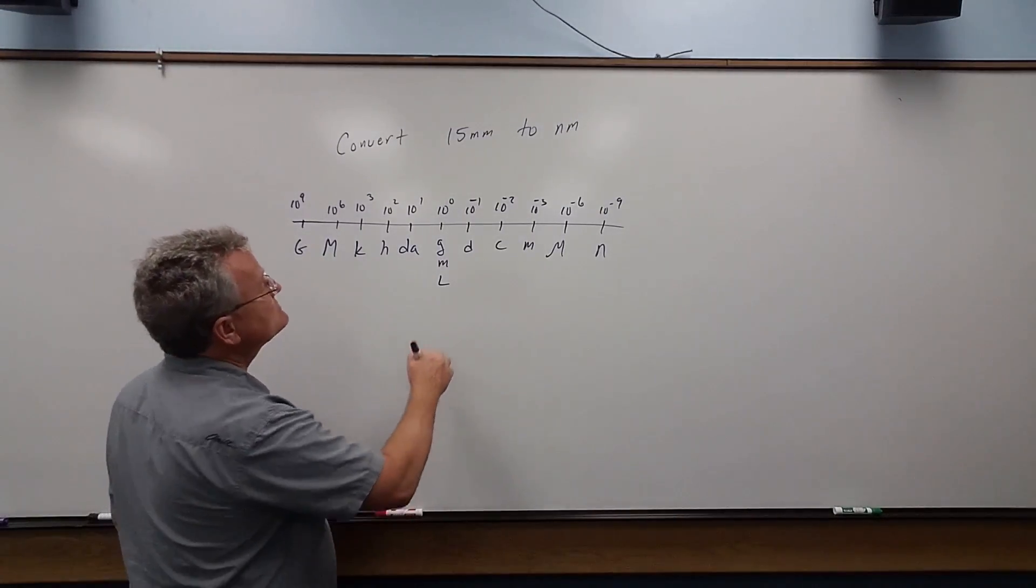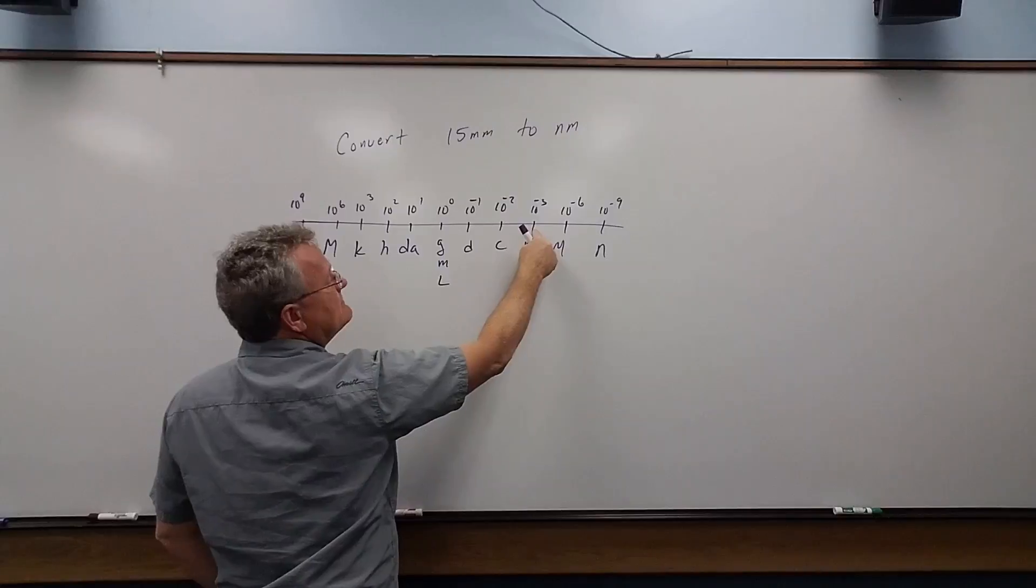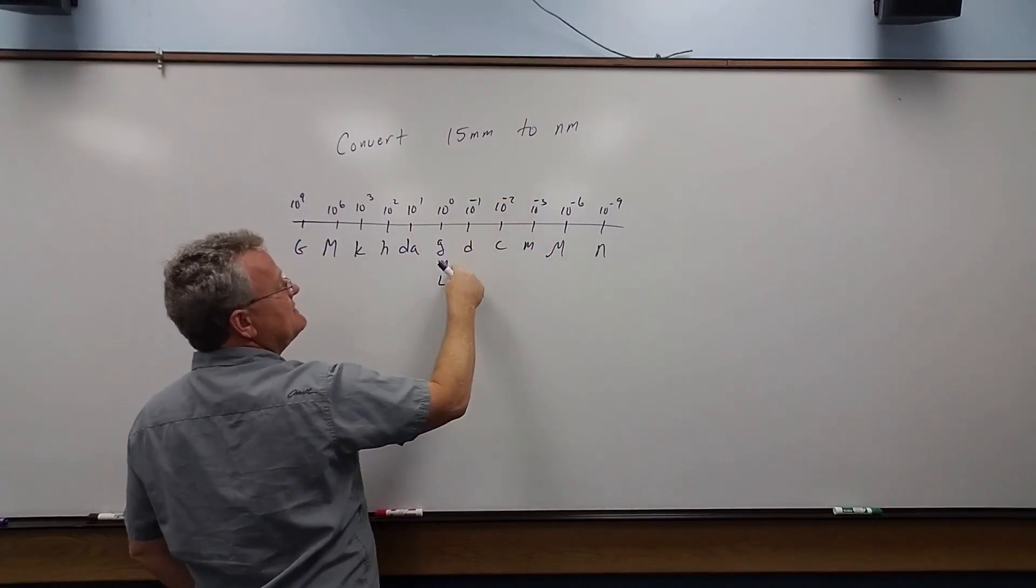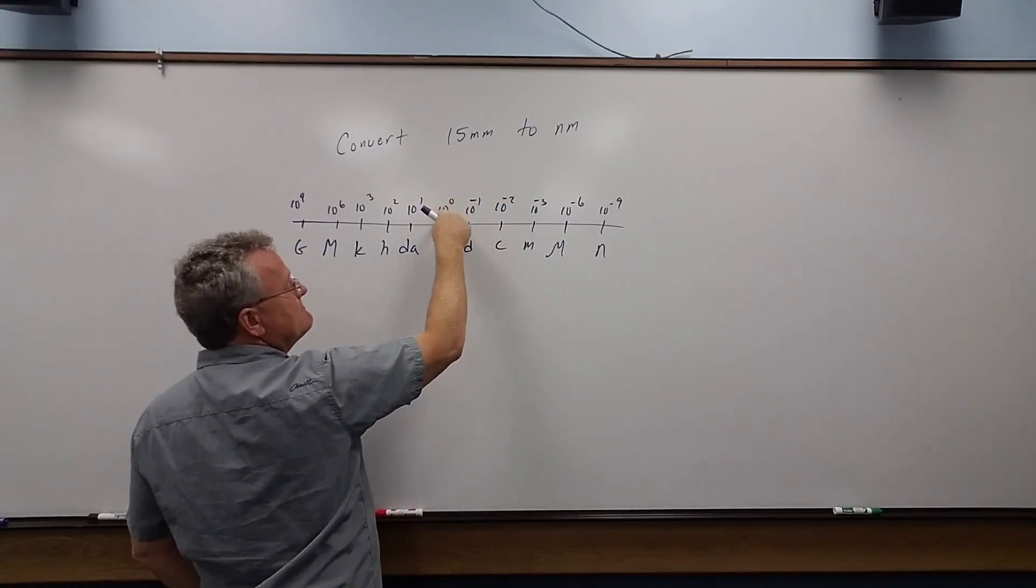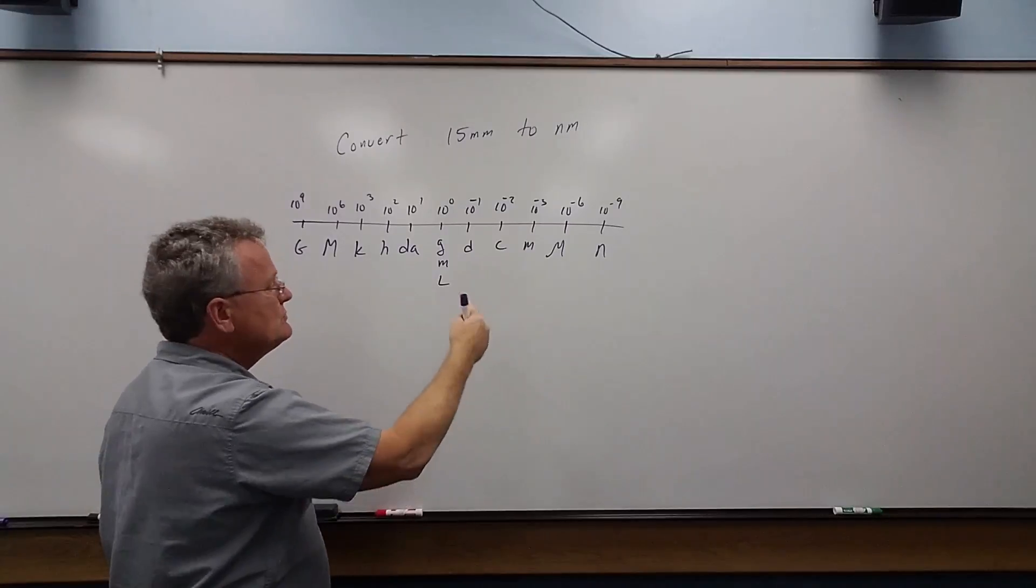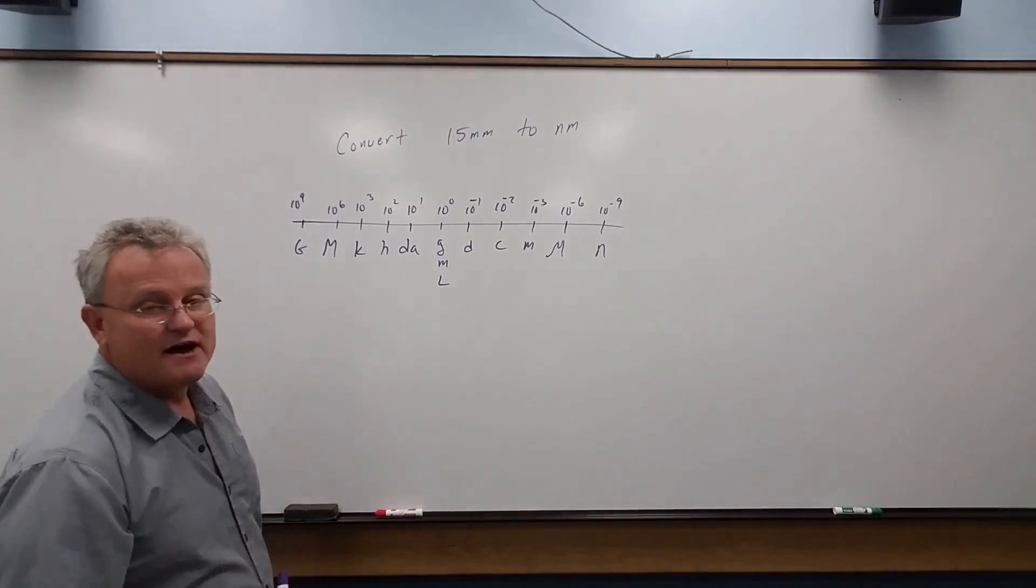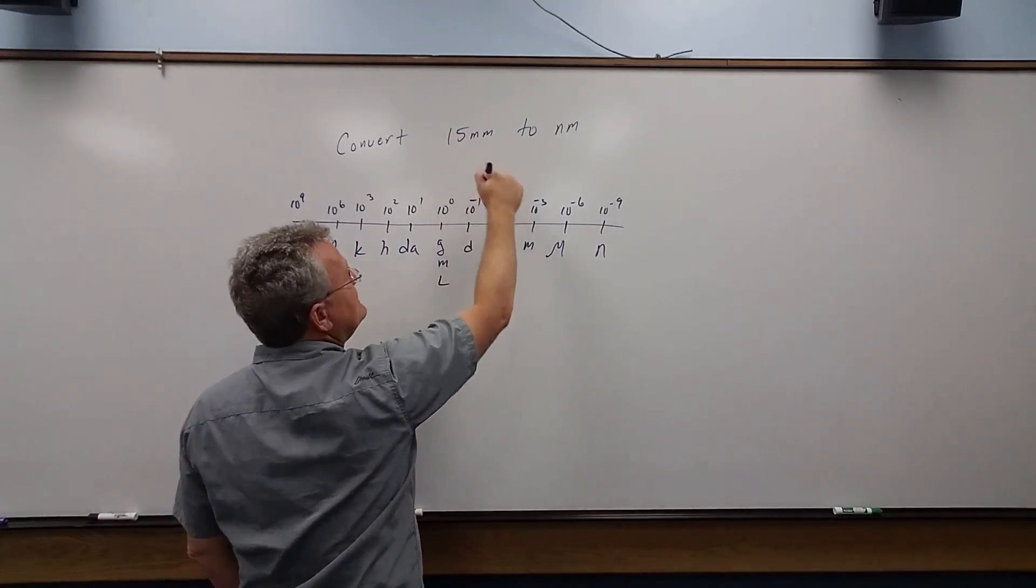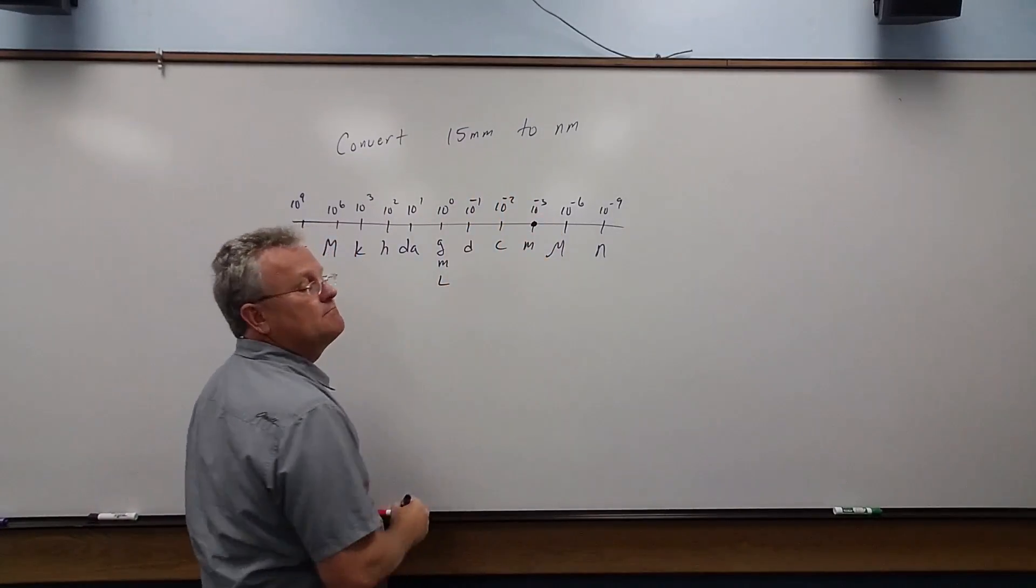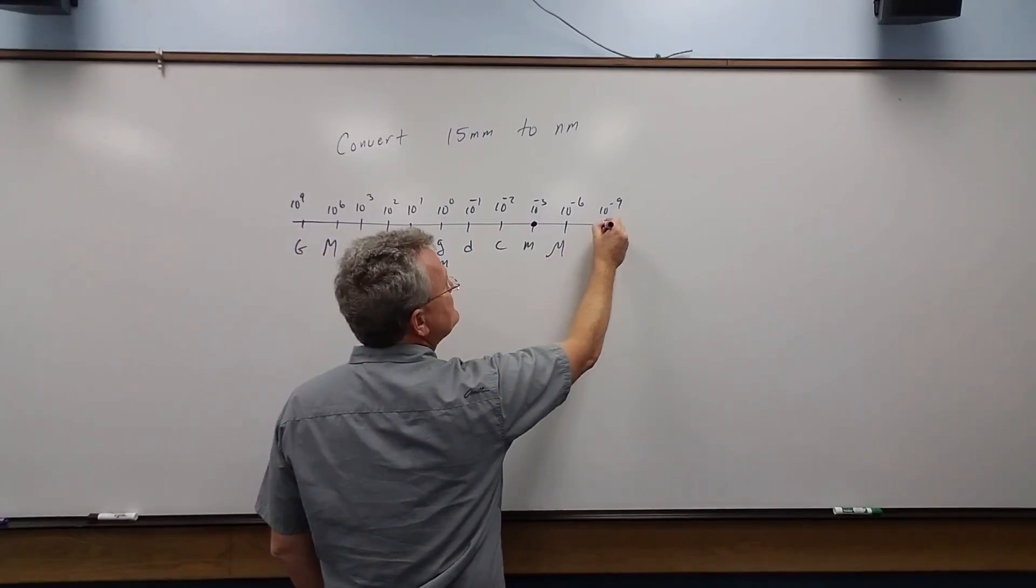So what we do here is we're starting with milli. Milli, in this case, is meters. In the middle is our fundamental unit: grams, meters, or liters. This one involves meters. So we're going from millimeters, and we're going to nano.